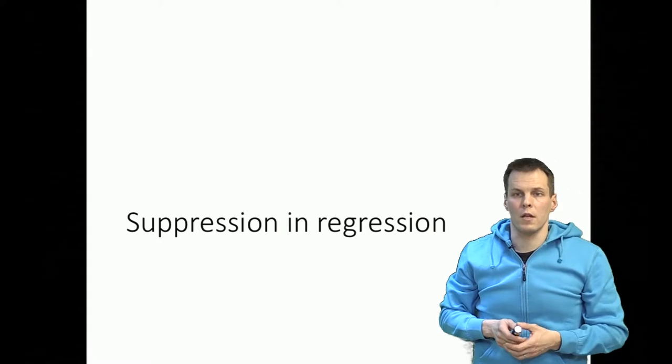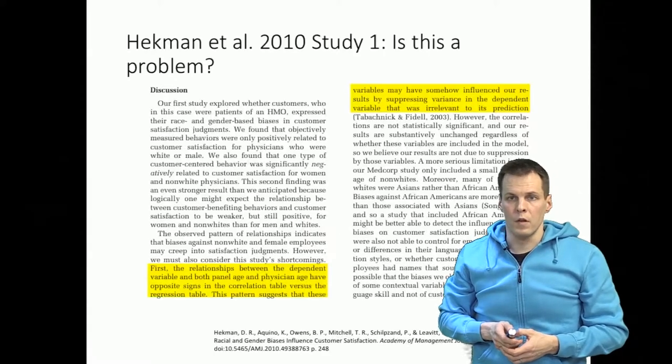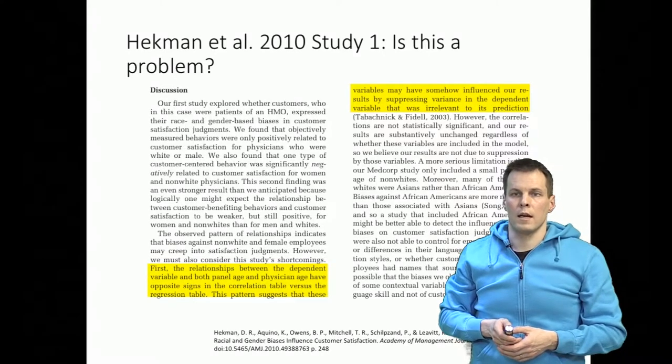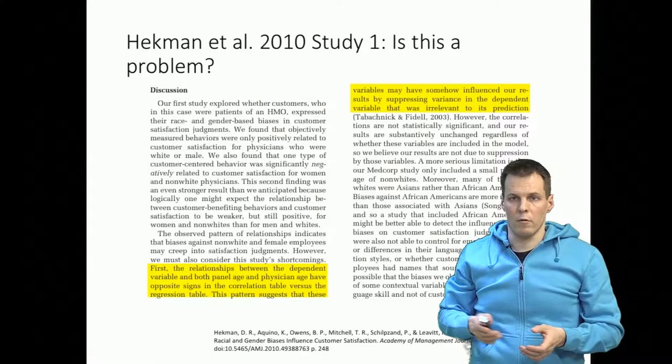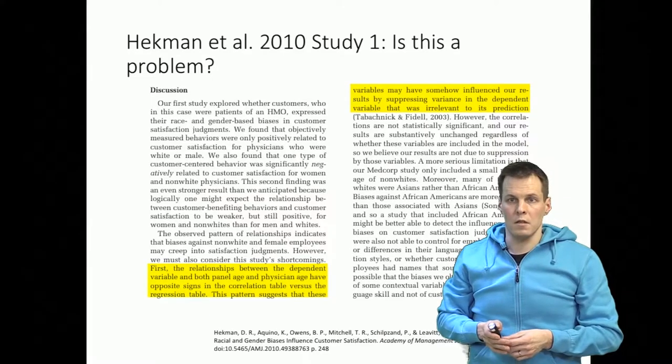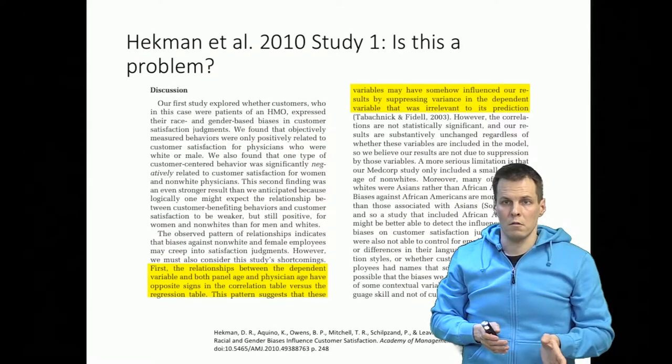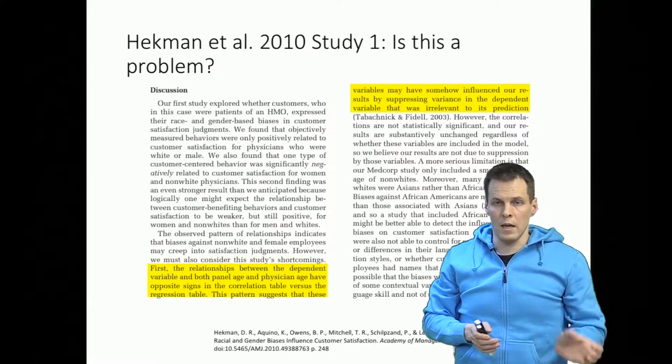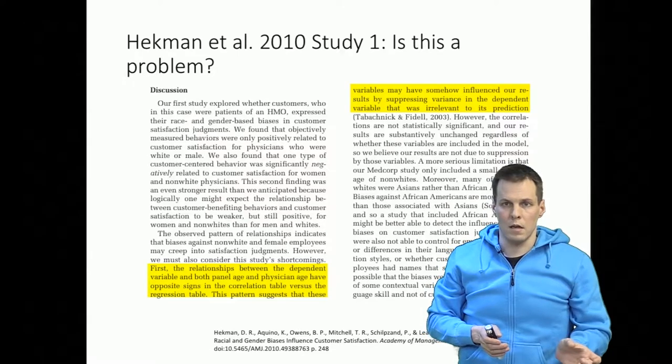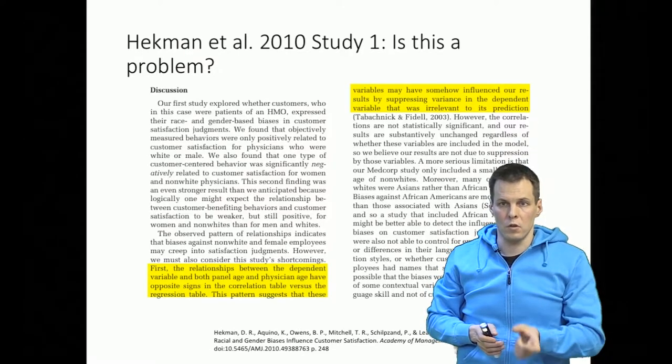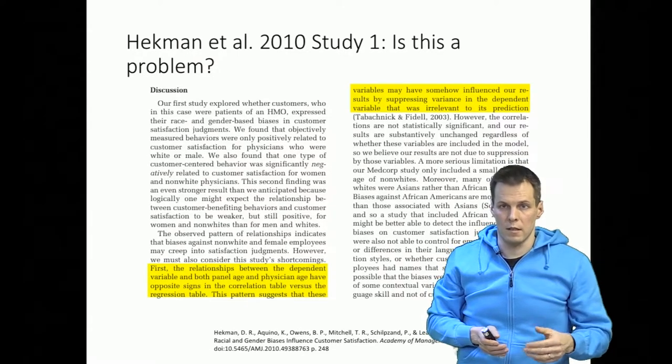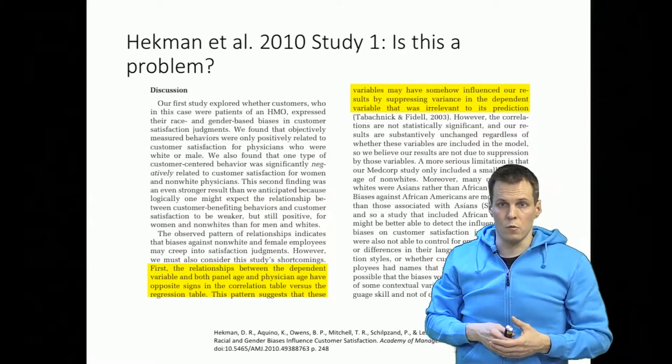Let's take a look at Heckman's paper because they mention suppression. They explain that in their correlation table and regression table the physician age has a different sign. So in the correlation table, the physician age correlation with patient satisfaction is positive, but in regression results it's negative. And that's the suppression effect.